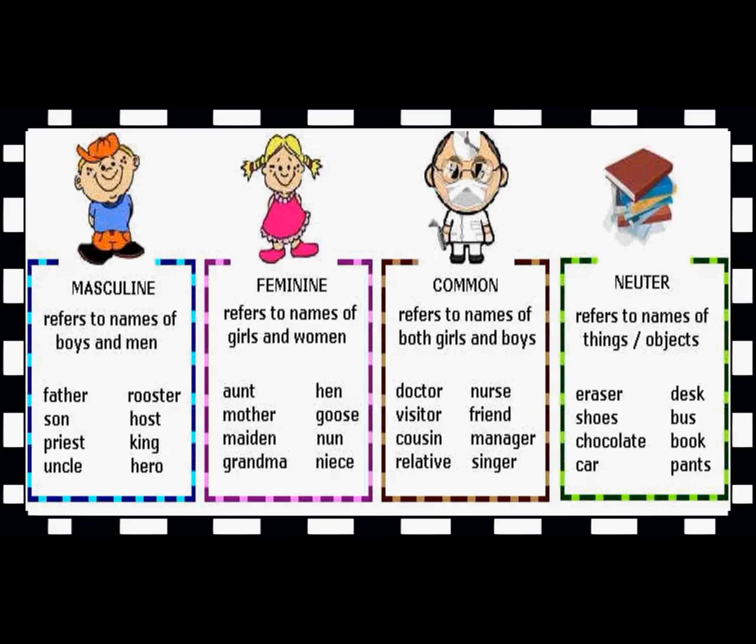Now coming to feminine gender. Feminine gender refers to names of girls or women — altogether it represents females. Can you see the examples? Aunt, mother, maiden, grandma, hen, goose, nun, niece. So all these nouns come under feminine gender.